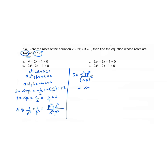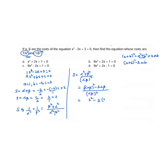Alpha squared plus beta squared equals alpha plus beta whole squared minus 2 alpha beta, using the algebraic identity: a plus b whole squared equals a squared plus b squared plus 2ab, so a squared plus b squared equals a plus b whole squared minus 2ab. Substituting: alpha plus beta is 2, so 2 squared minus 2 times 3 equals 4 minus 6 equals minus 2. Divided by alpha beta whole squared, that is 9, giving minus 2 by 9 as the sum of the new roots.